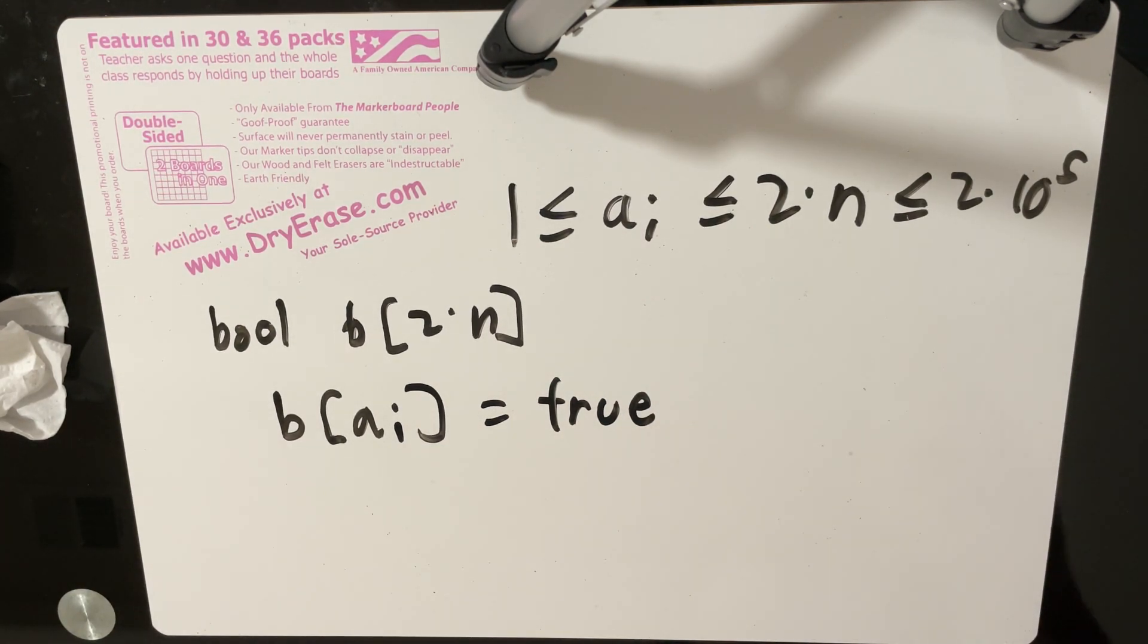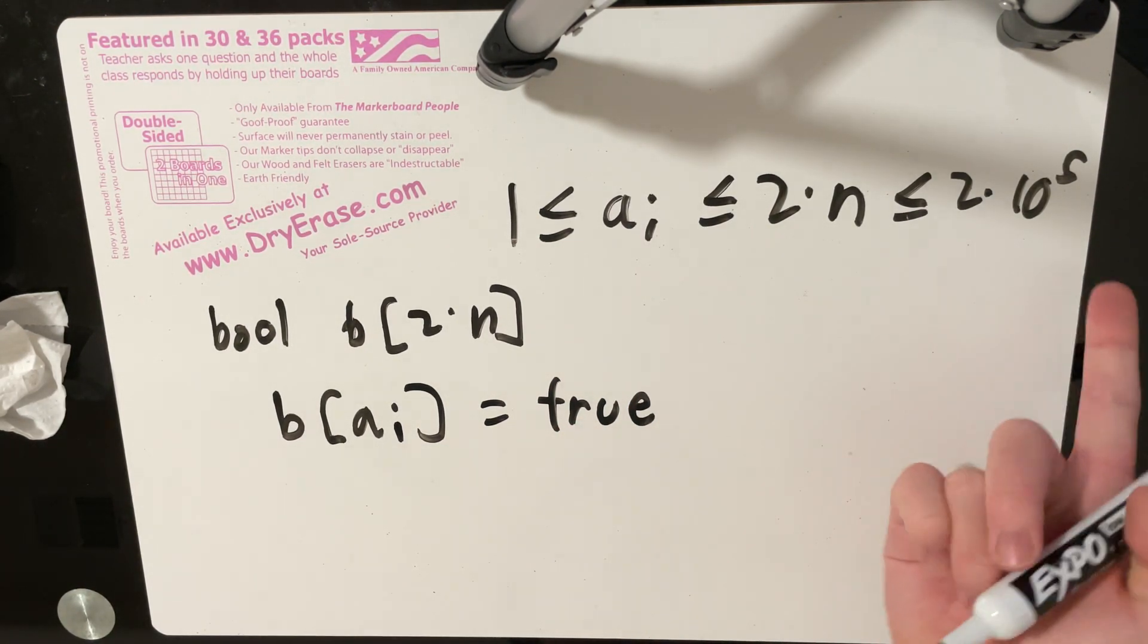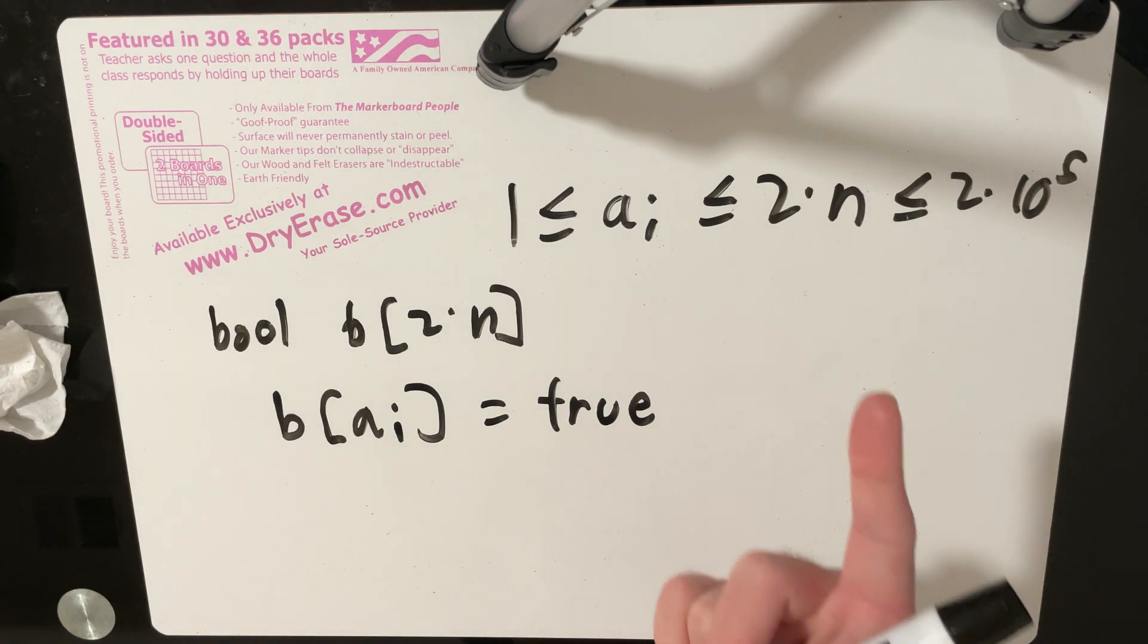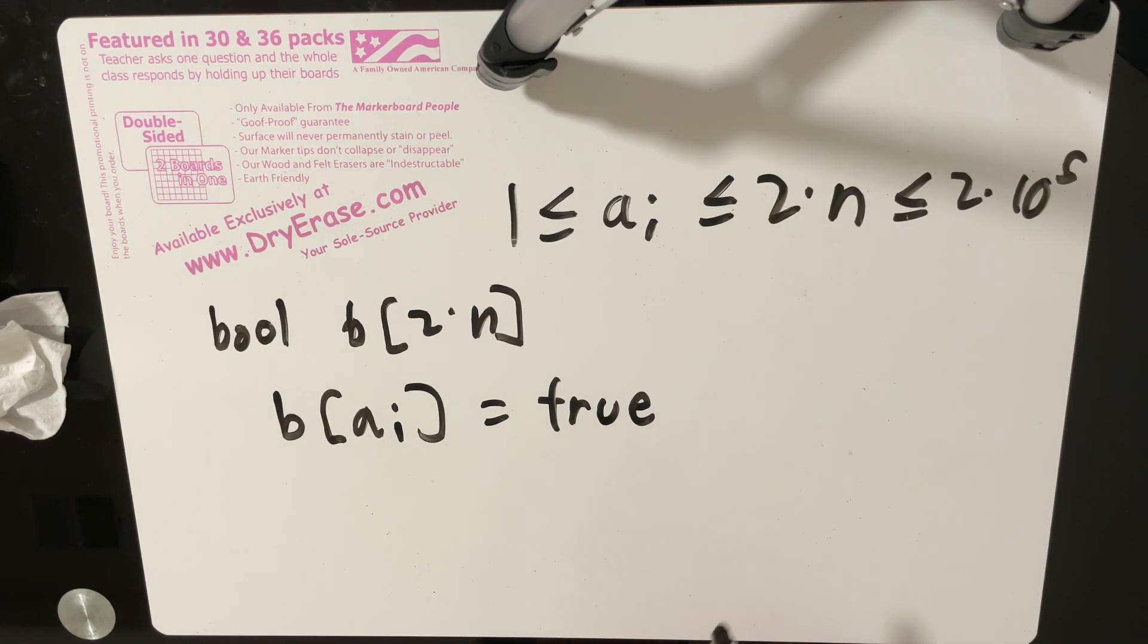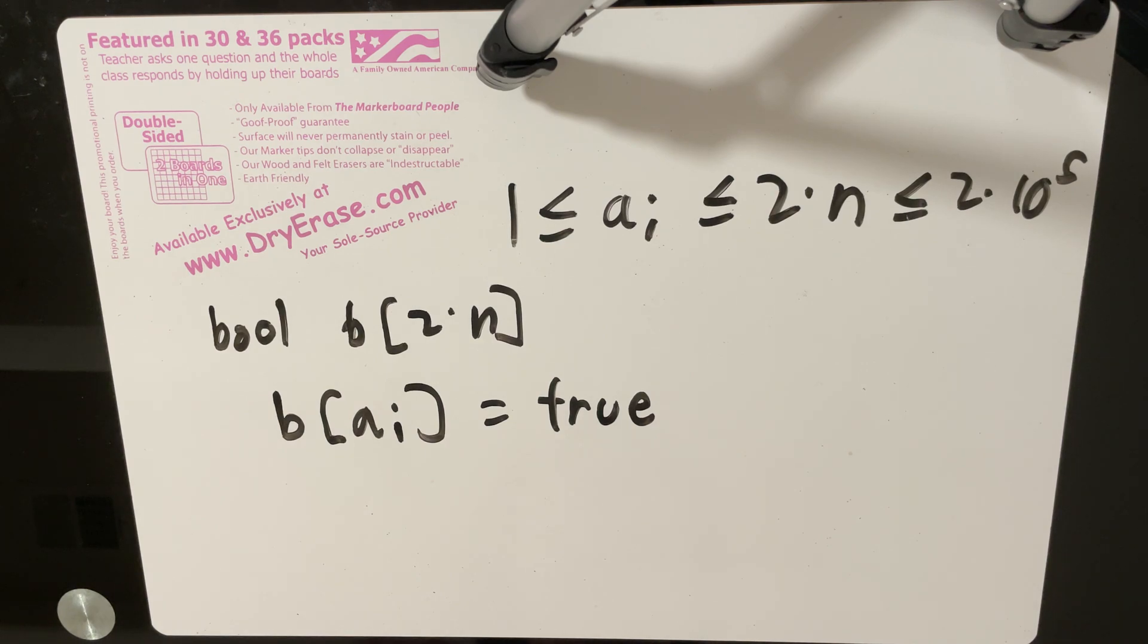And the reason why we can do this is because, well, one, because the values are never too big. And two, all elements are guaranteed to be distinct. So we don't have to keep track of any multiplicity of numbers because every number will either appear zero times or one time. It's true or false. So after we do this, we want to use something called a sieve.